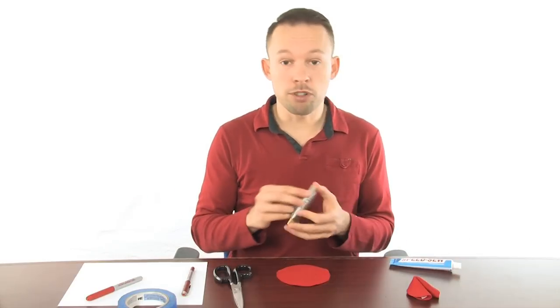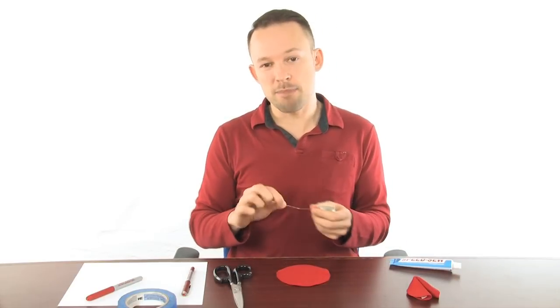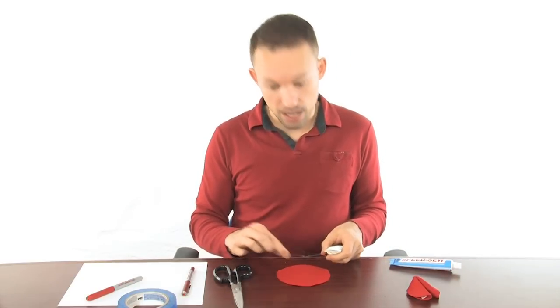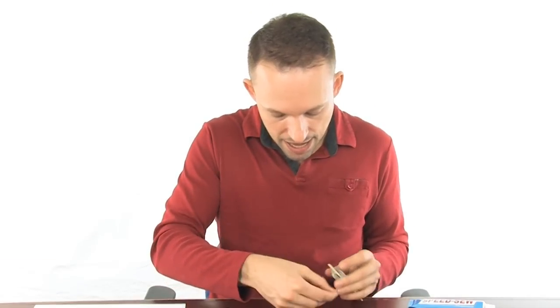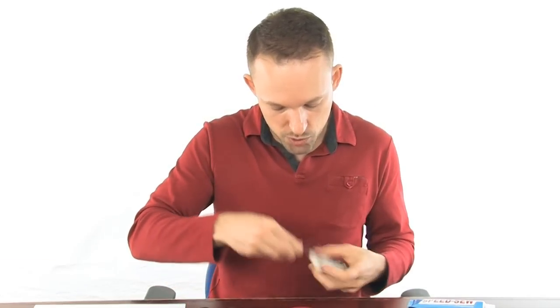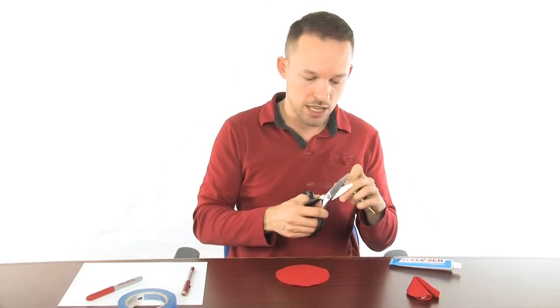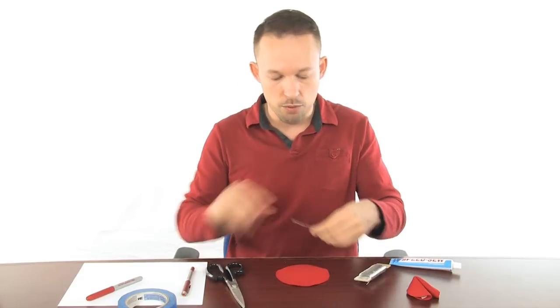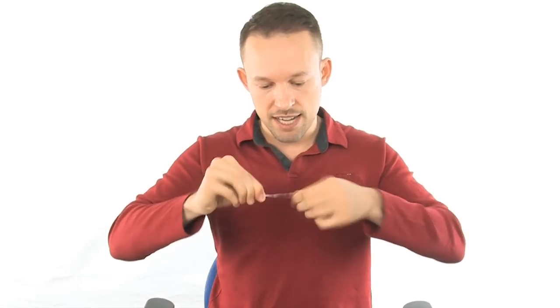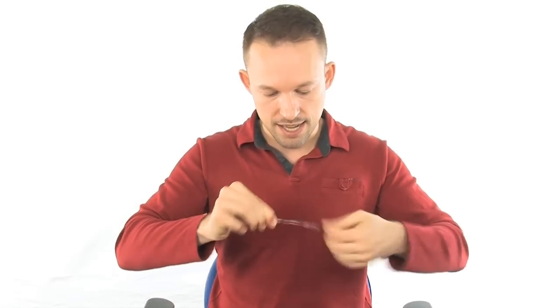Next, grab your floral wire and we want to measure out a piece that's about half an inch shorter than the diameter of our circle. And since mine is quite thin, I'm going to bend it in half so that it is twice as strong. I'm going to twist it all up together so it's like one piece and try to get it as straight as I can.